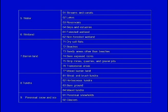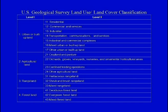For more detailed information, Level 2 information classes can be used. For example, urban or built-up area can be further subdivided into 7 detailed classes such as residential, commercial and services, industrial, transportation, communication and services, industrial and commercial complexes, mixed urban, and other urban land. Similarly, agricultural land can be broken into 4 detailed classes, range land into 3, forest into 3, water into 4, wetland into 2, barren land into 7, tundra into 4, and perennial snow and ice into 2 detailed classes.